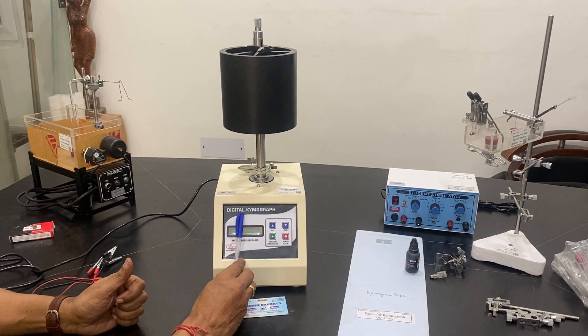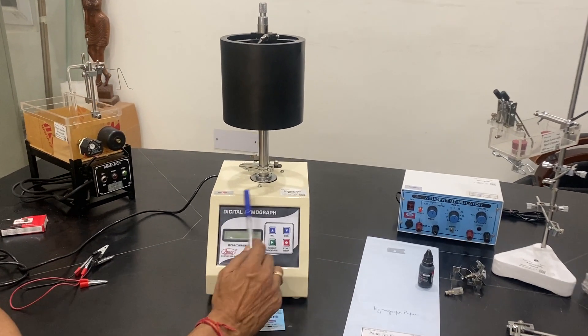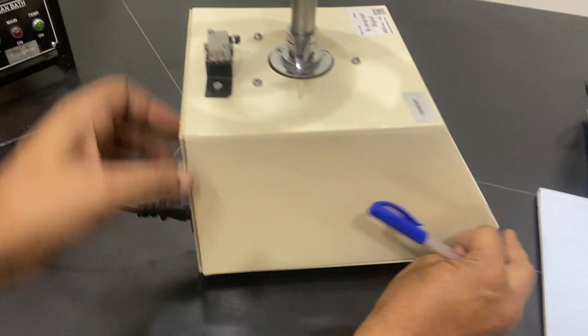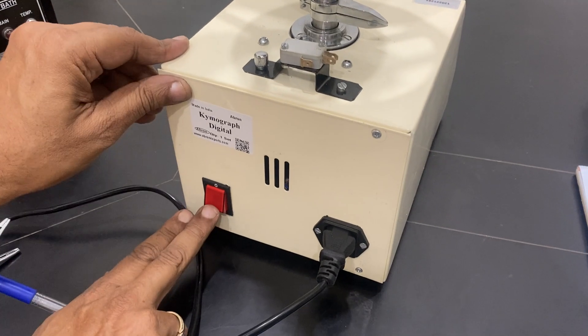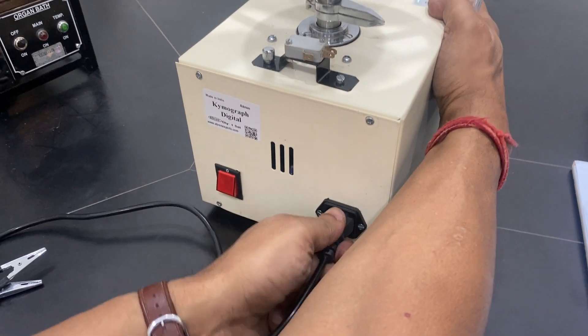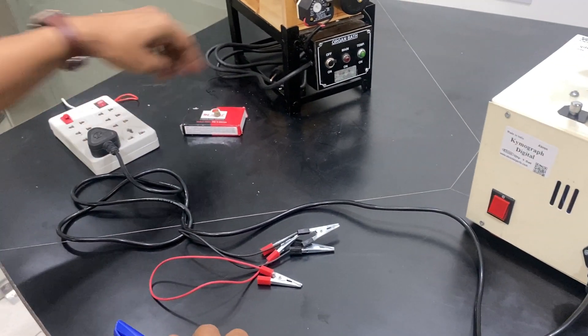This is a brand digital kymograph. Now let us learn what are the parts of it. We have on the back a power switch and the computer attachment unit. This particular model has two types of wires with us.